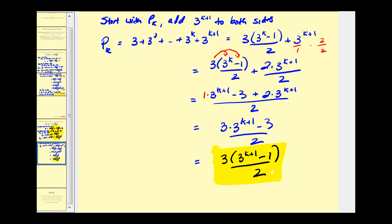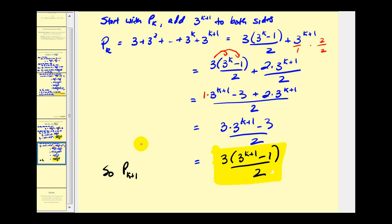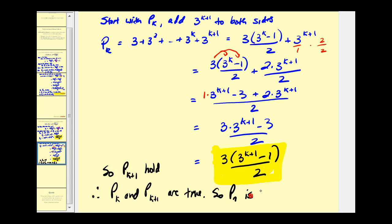Going back to the previous screen, P sub k plus one was equal to this, and therefore we've shown that it is true. Here's the formula we're trying to match, and we did. Therefore P sub k plus one does hold, and P sub k and P sub k plus one are both true. So P sub n is true for all n where n is a positive integer. And that's going to do it for the introduction to mathematical induction. I hope you found this helpful.